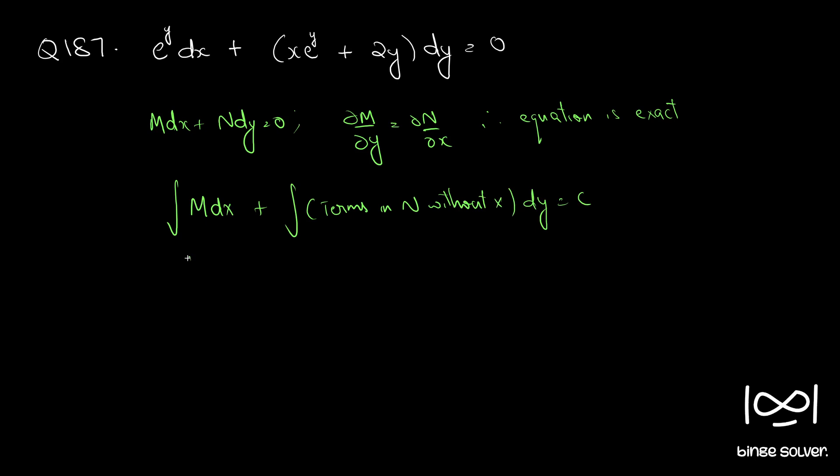So if you do this we have e raised to y dx plus terms n without x which is 2y dy equal to c, or e raised to y into x plus y square is equal to c. So we get the solution.